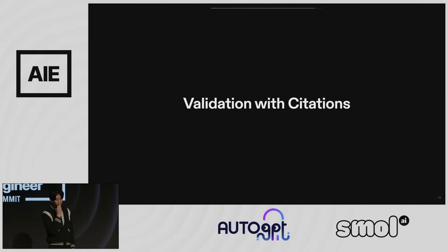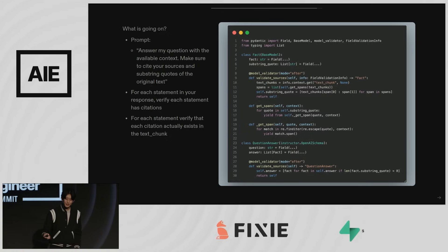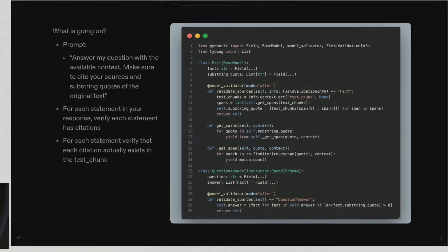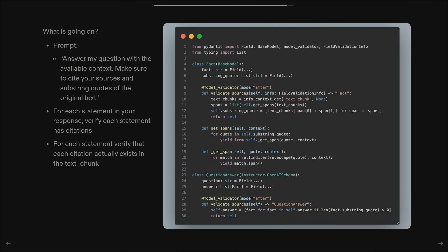Here's a more advanced example: a question-answer structure where a question has an answer that's a list of facts. A fact is a statement plus substring quotes from the original text. Validators check that for every quote you give me, it exists in the text chunk — if it's not there, throw out the fact. The question-answer validator only shows facts that have at least one substring quote from the original document. This encapsulates business logic to prevent hallucination — not by asking the model not to hallucinate, but by using paraphrasing detection to identify what the quotes actually were.